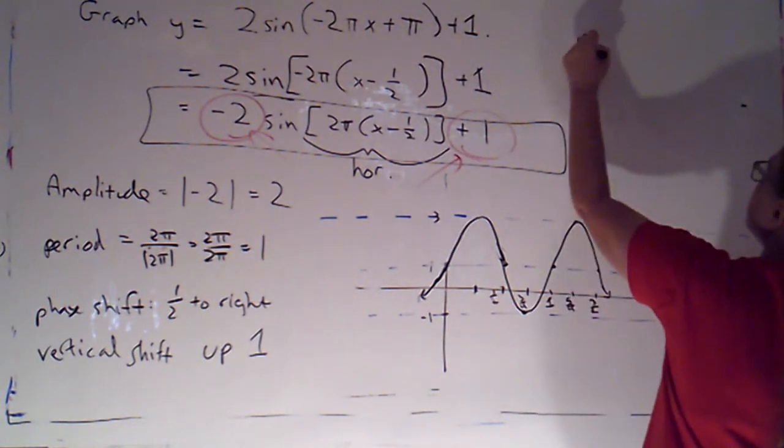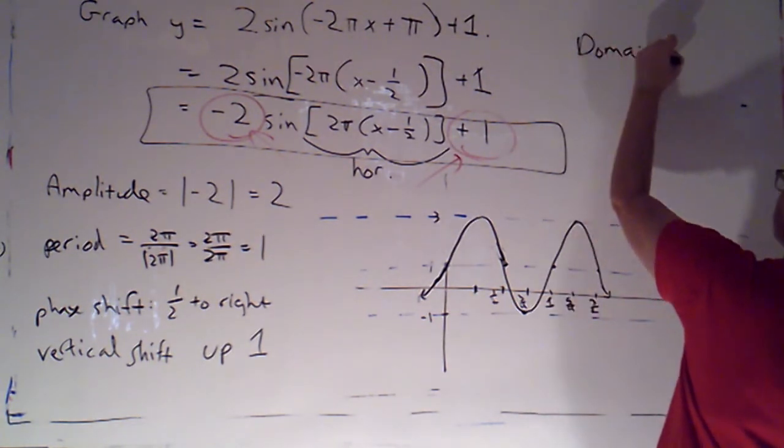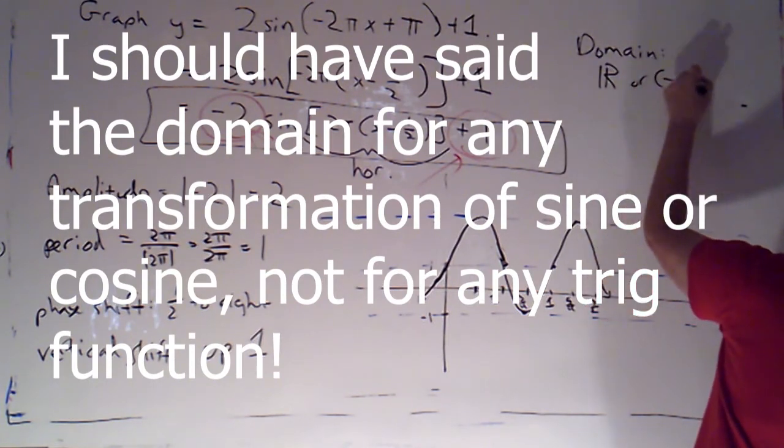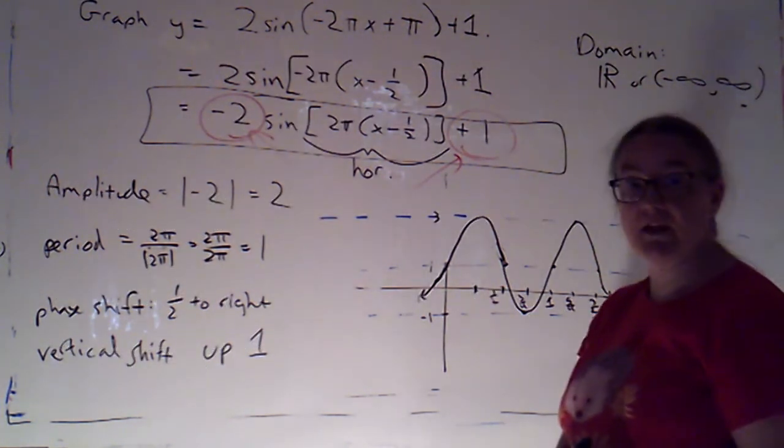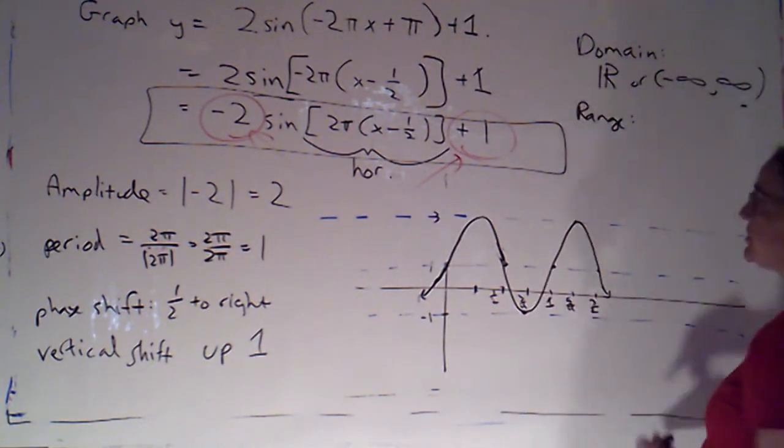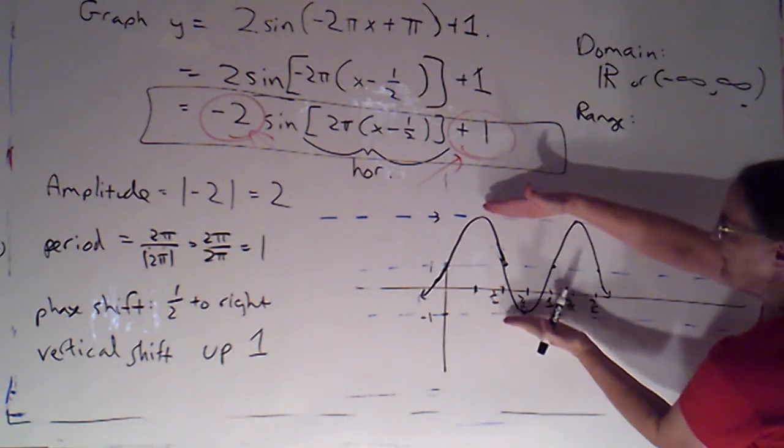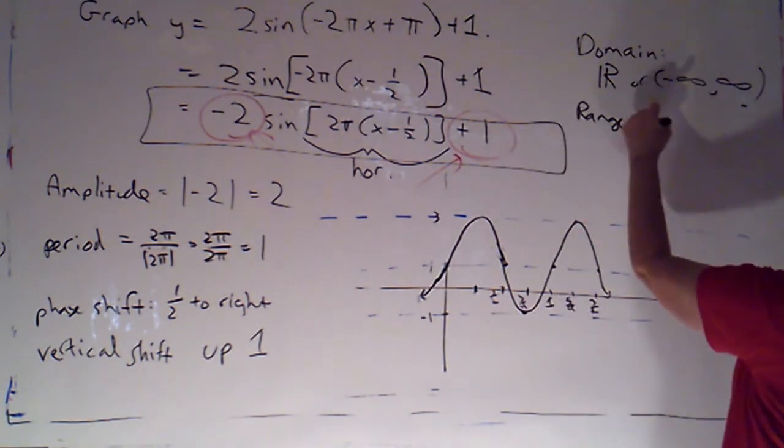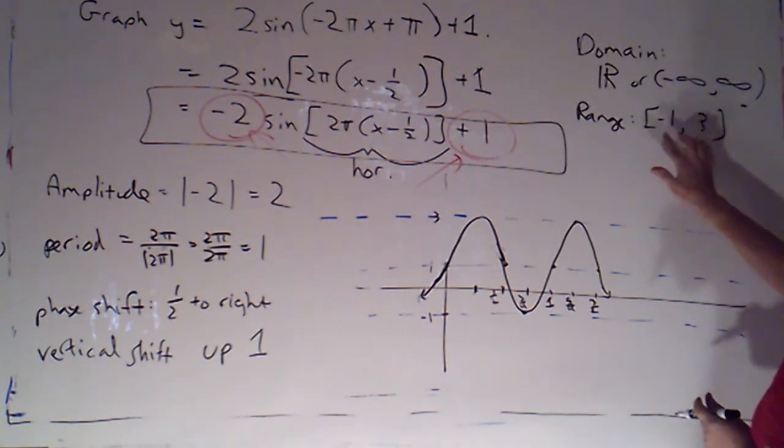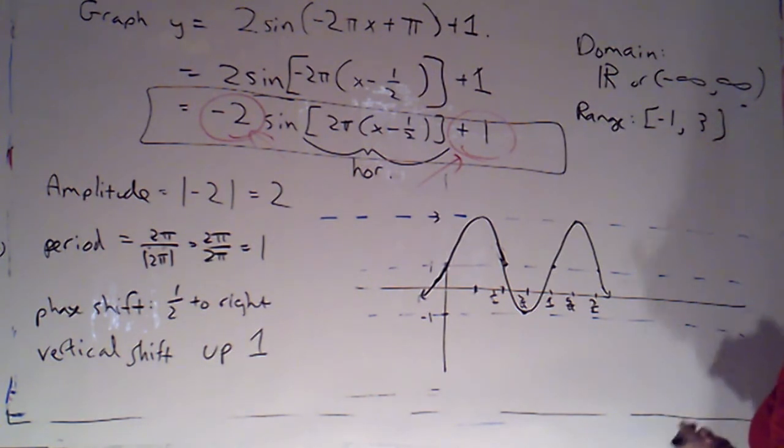I mentioned that the domain for any trig function was going to be all real numbers. Or equivalently, of course, in interval notation. That's negative infinity to infinity. The range is just going to be the interval between the low value and the high value. So, that's going to be from negative 1 to 3. Now, do be careful. Make sure that you include those. So, these are brackets. And make sure that you go from the low value to the high value.